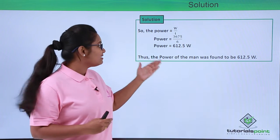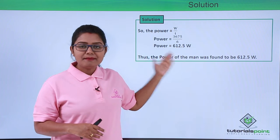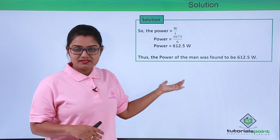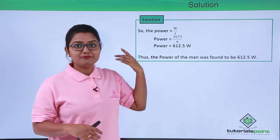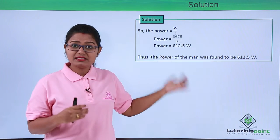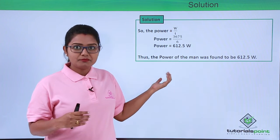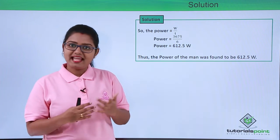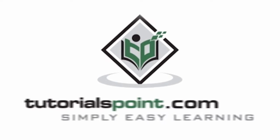So this is the power of the man who has climbed up a staircase of 30 steps that was 7.5 meters in height in 6 seconds. This was the solution of the entire problem and I hope this solution was fully understandable to you. Thanks for watching tutorialspoint.com, simply easy learning.